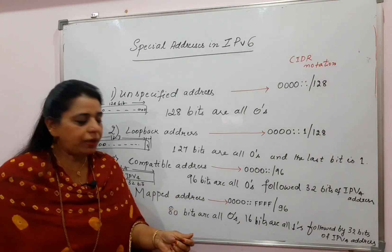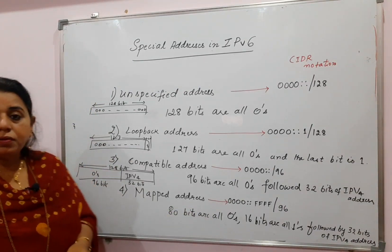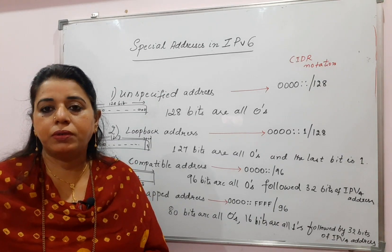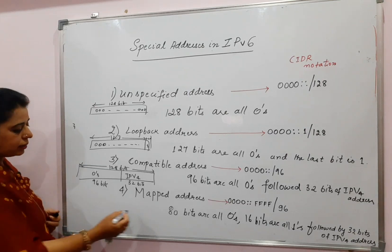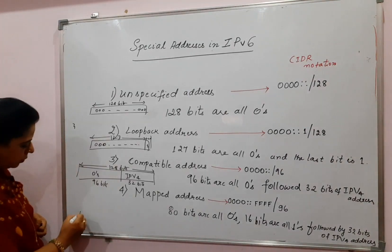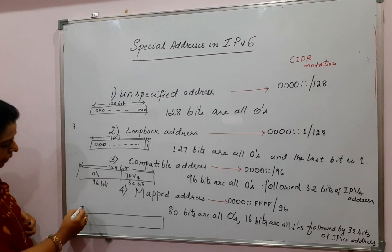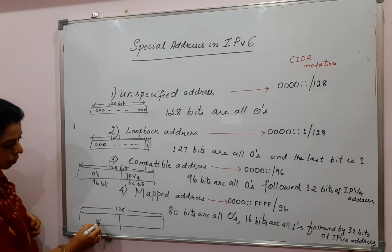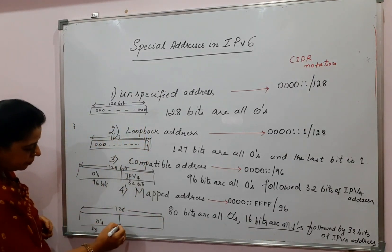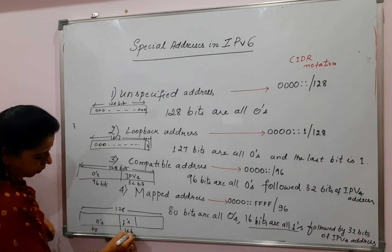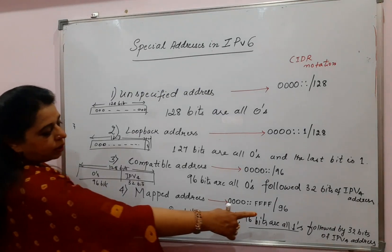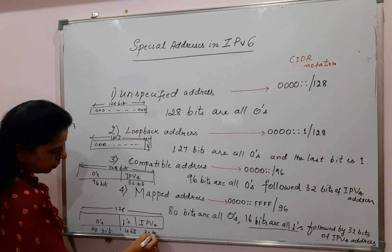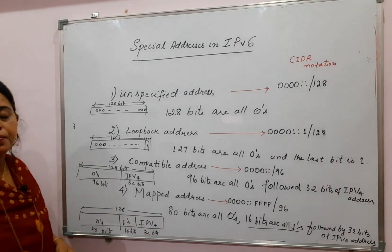The mapped address is the last category of special addresses. Mapped addresses are used when a computer using IPv6 wants to send a message to another computer using IPv4. The address is made up as follows: the first 80 bits are all zeros, followed by 16 bits that are all ones, and the last 32 bits are an IPv4 address. So 80 plus 16 plus 32 makes 128 bits in total.